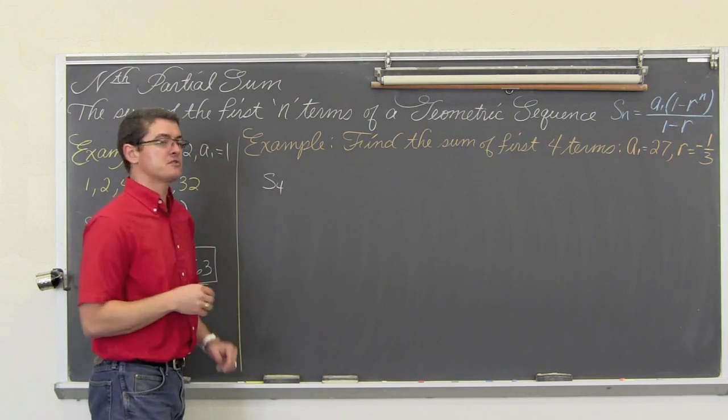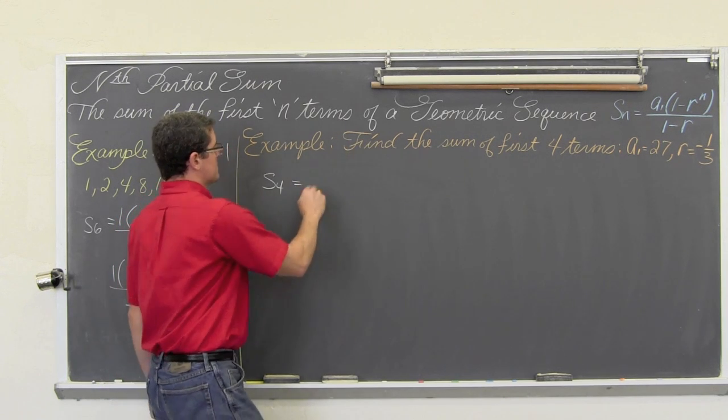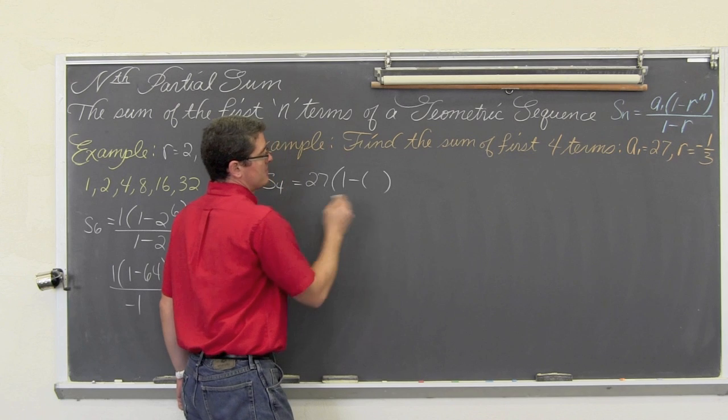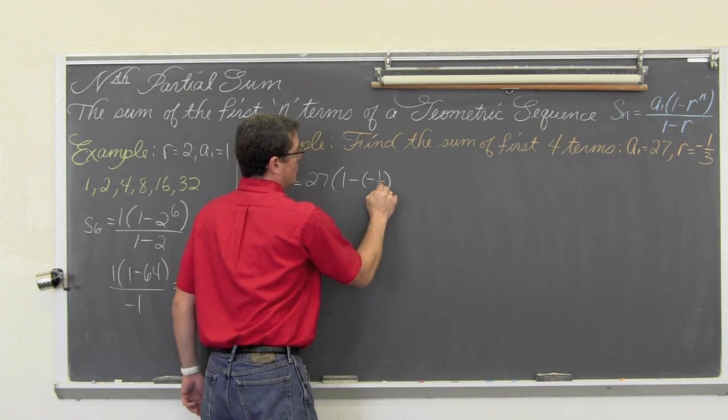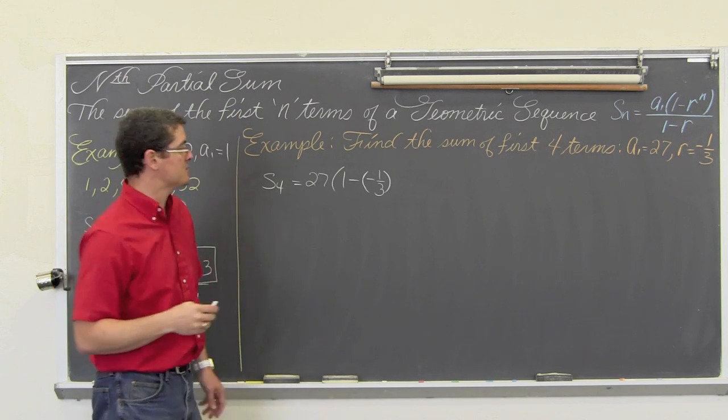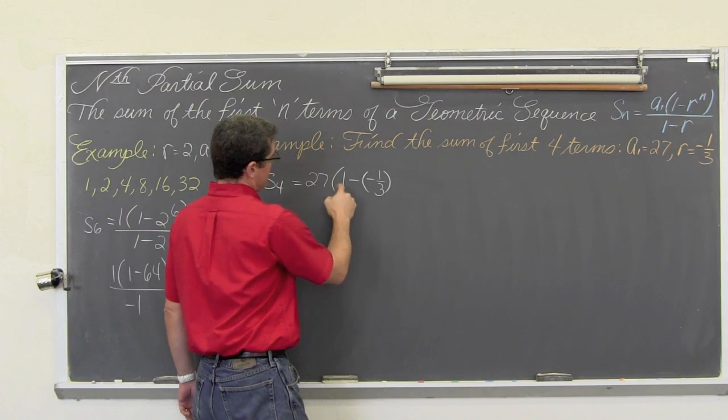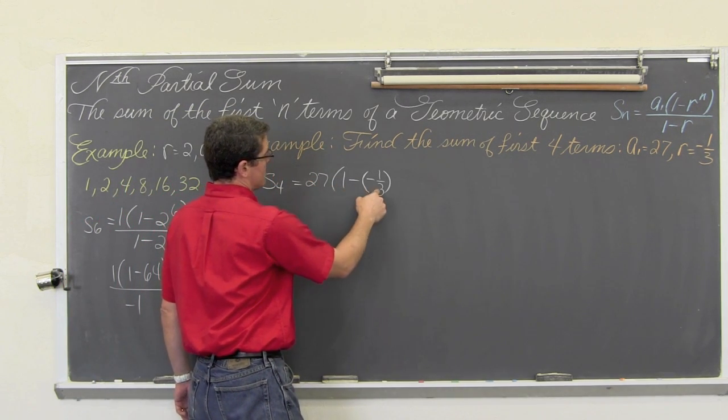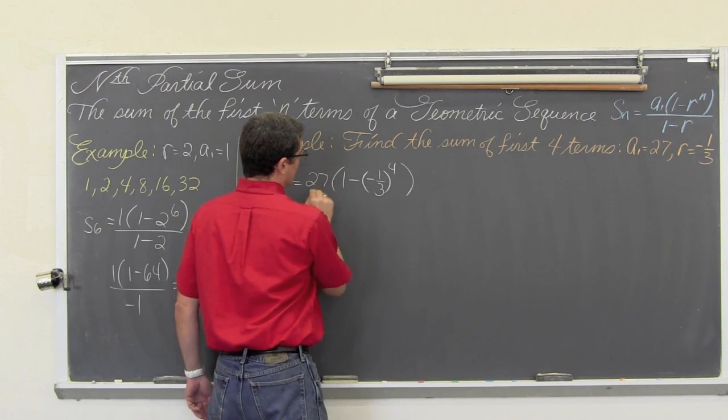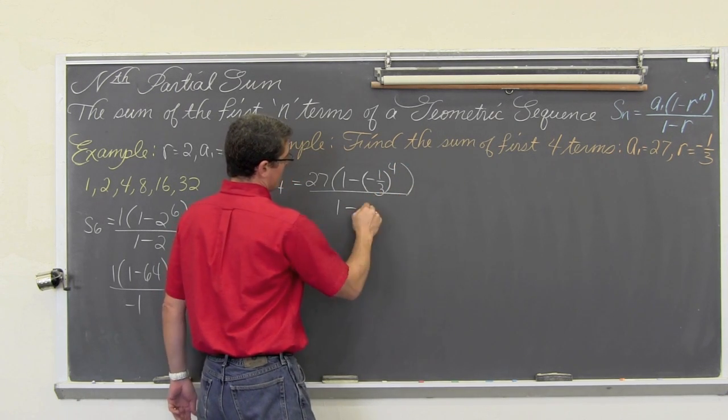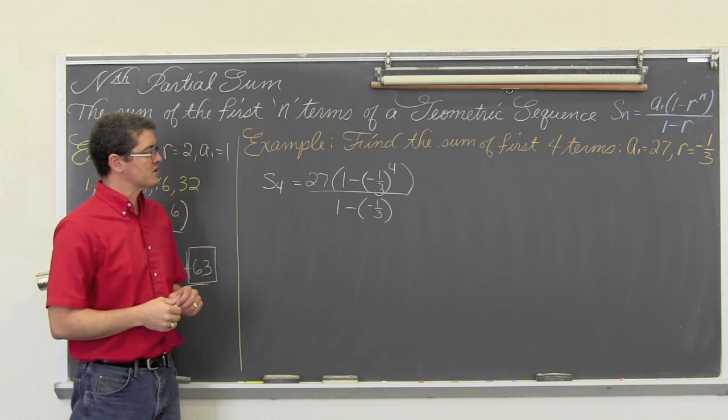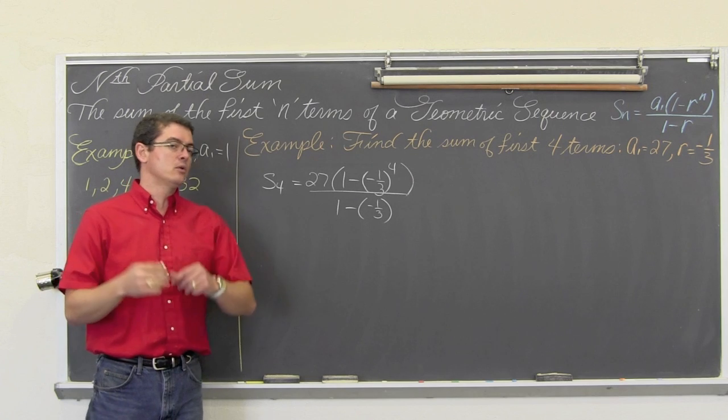So s of 4, because we are going to find the sum of the first four, is equal to a sub 1, which is 27, times 1 minus r. Notice I am using parentheses when I plug in my r value. That usually helps students make fewer sign errors. So it is a sub 1 times 1 minus r to the n power. We are just going to find the sum of the first four, over 1 minus r, which again is negative 1 third.